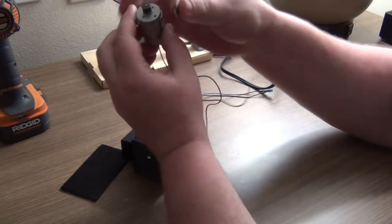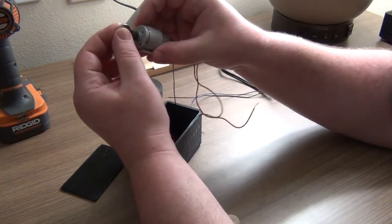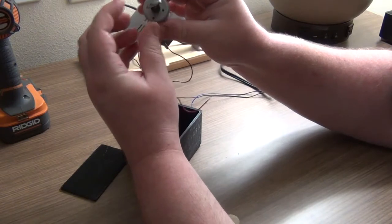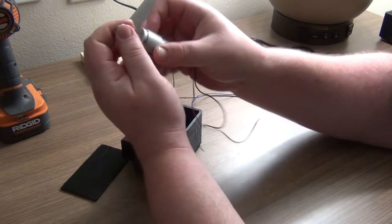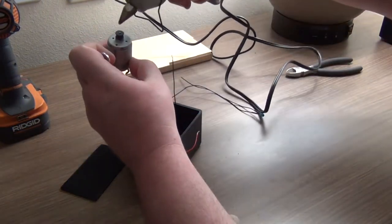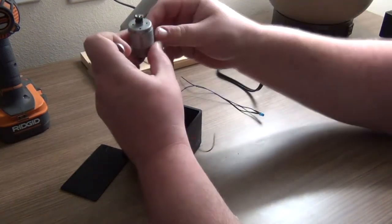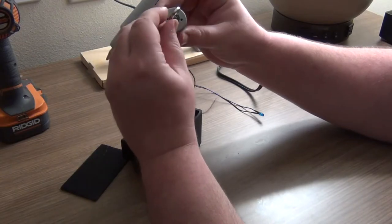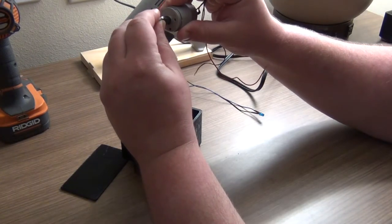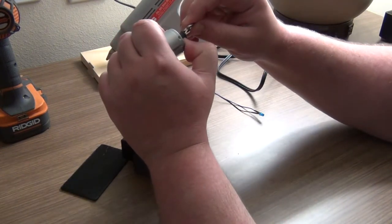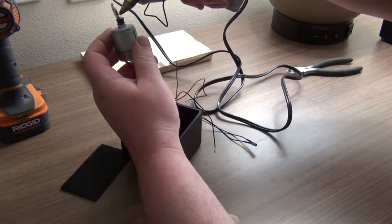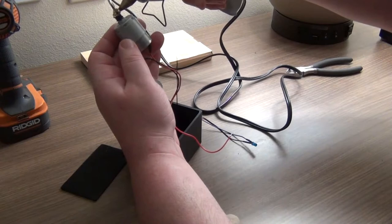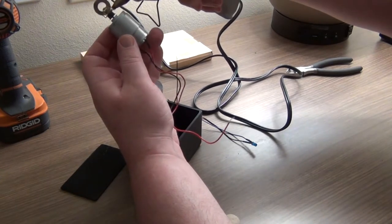Next thing we want to do is affix our neodymium magnet to the end of our motor. So you want it as centered as possible so your motor doesn't shake. So as best as you can get it on there. What I like to do is put a little glue first. Set the magnet in that. And then cover the base of the magnet all around with the hot glue to help secure it. This will be moving at high speed so the more secure we can make it the better.